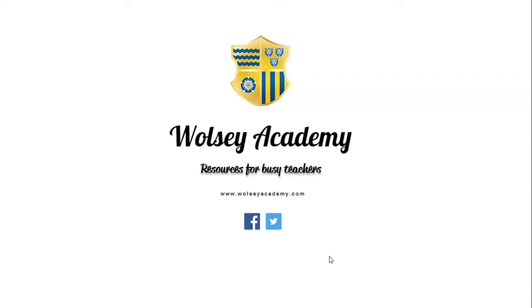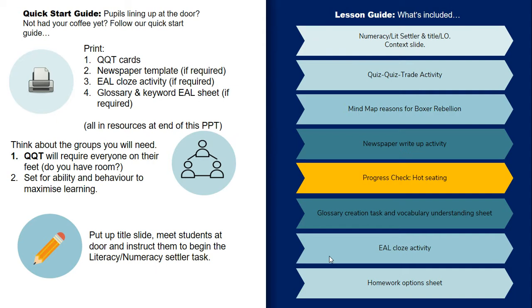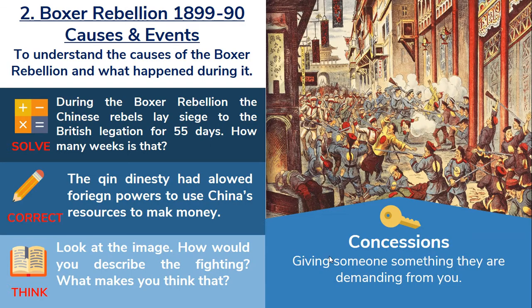I'm going to give you a quick run-through of lesson two in the IGC History, China, Conflict, Crisis and Change. This is your quick start guide. To start off, there's the usual format for my opening screen — a settler for students as they come in, with a numeracy task, a literacy task, and some thought questions.